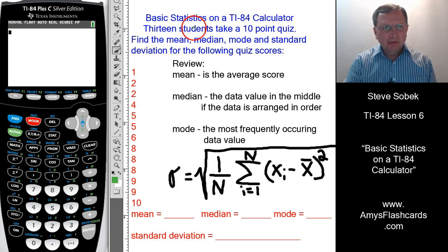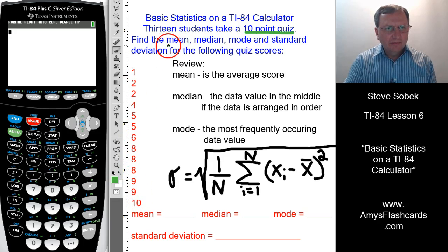For example, here we have 13 students who have taken a 10-point quiz. Here are their 13 quiz scores. We would like to find the mean, the median, the mode, and a standard deviation for these quiz scores.